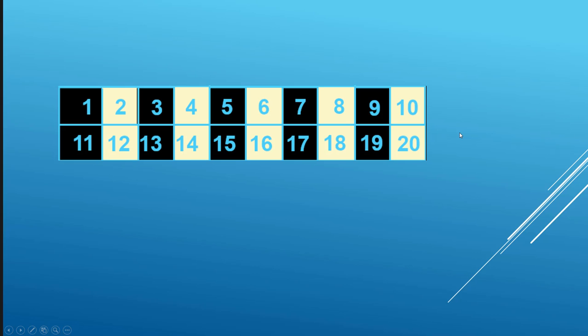Pick a fact. Like two times nine is eighteen. Cover it up. Say it again. Two times nine is eighteen. Then count them off.